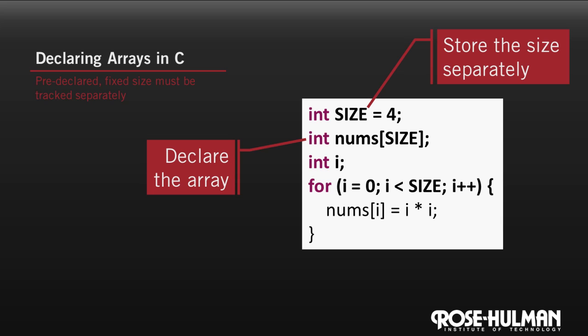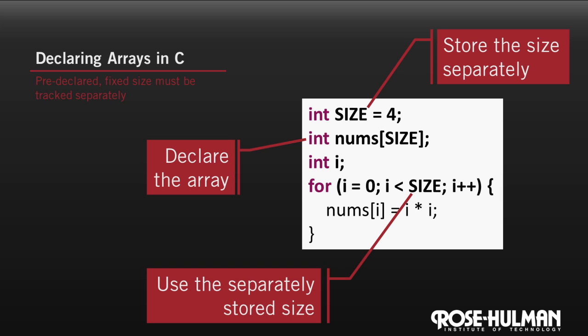Unlike lists in Python, arrays in C cannot grow or shrink. Because the size is stored separately from the array, when we want to iterate over the elements of an array in C, we have to use our separate size variable. We can't ask an array for its own length.